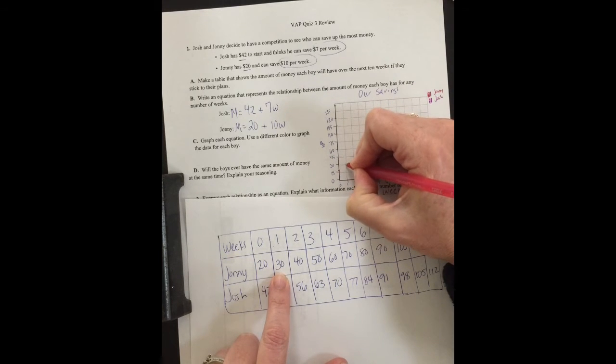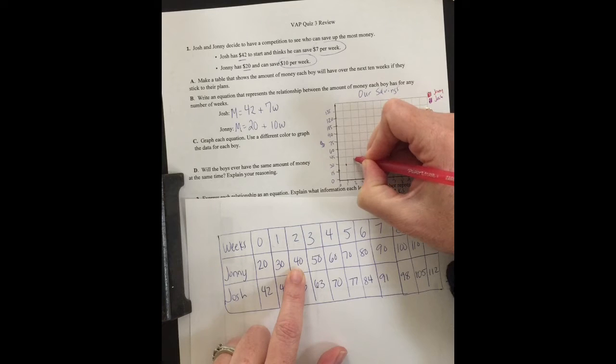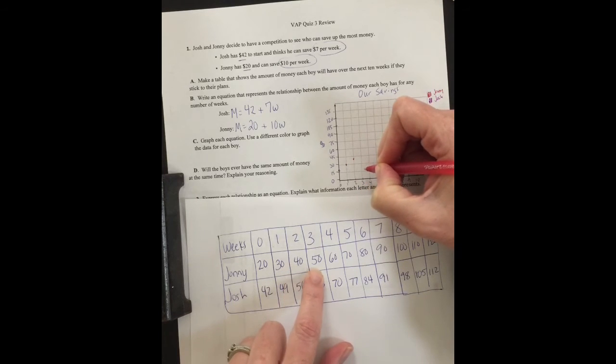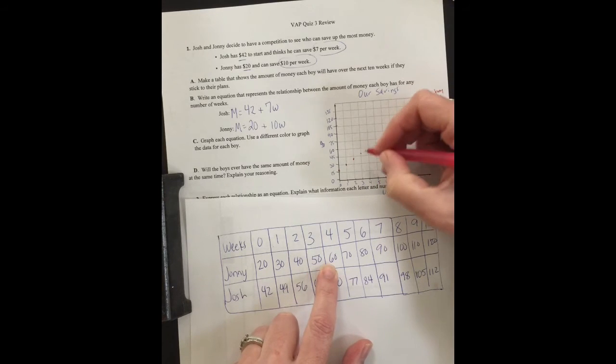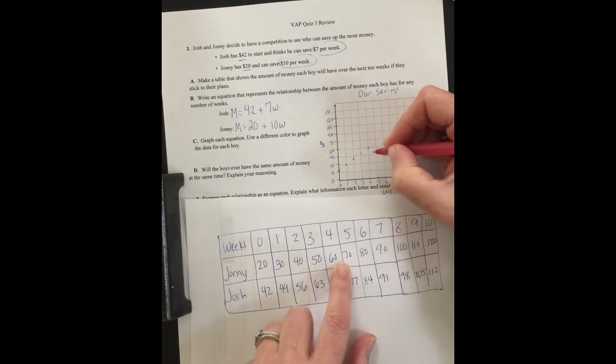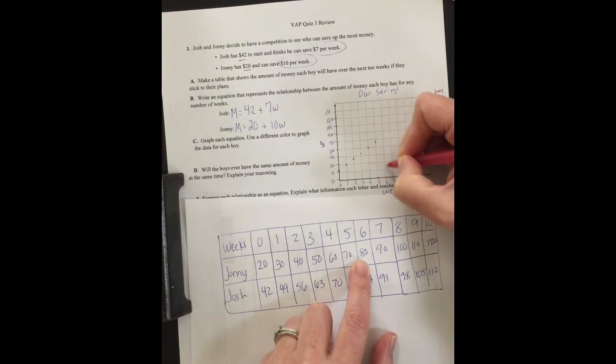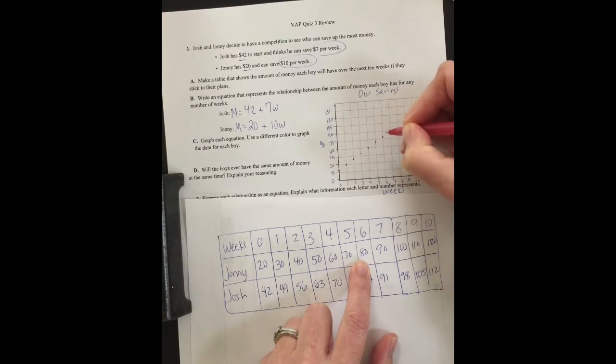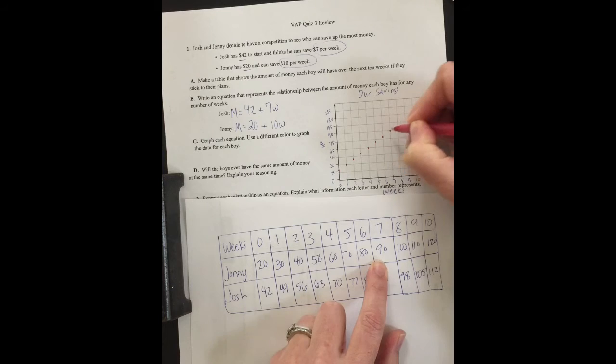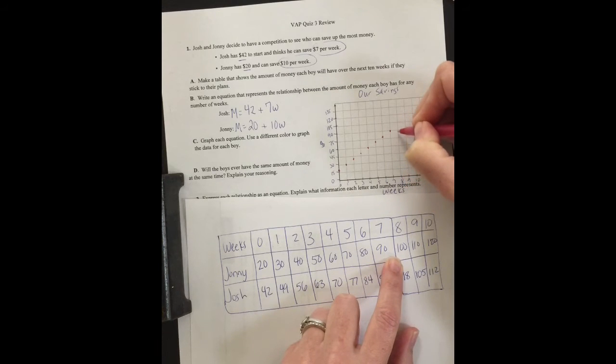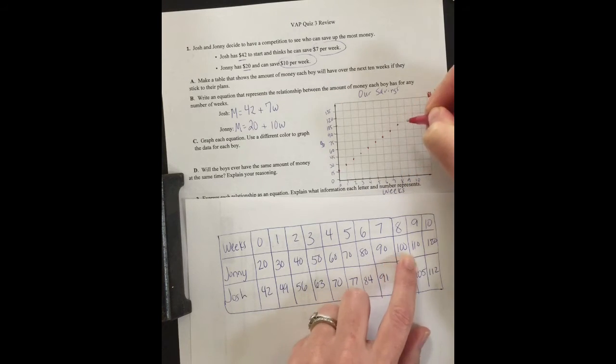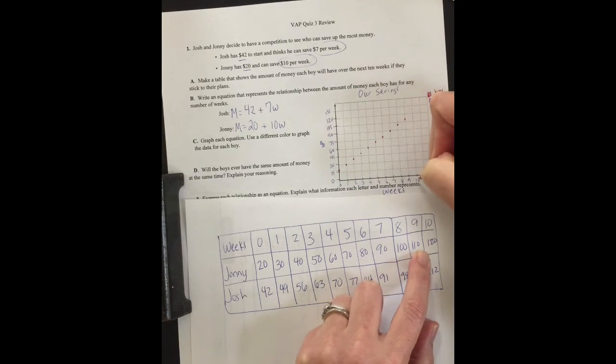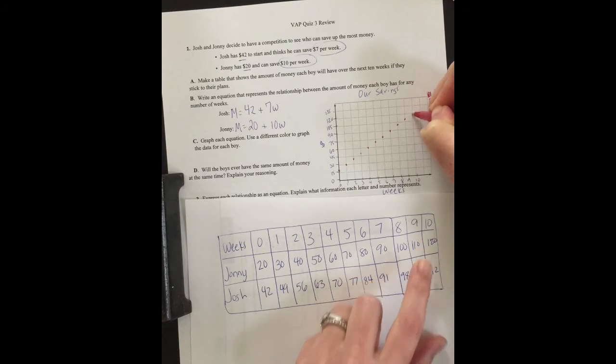At week one, Johnny has $30. At week two, he has $40. At week three, he has $50. At week four, he has $60. Week five, he has $70. Week six, he has $80. Week seven, he has $90. Week eight, he has $100. Week nine, he has $110. Week 10, he has $120.